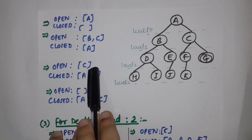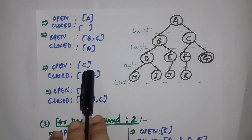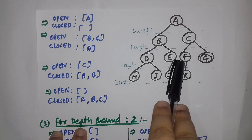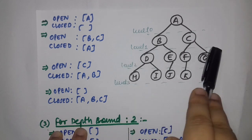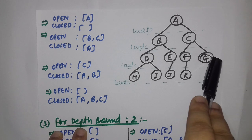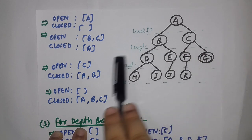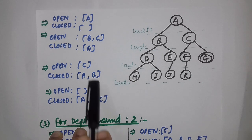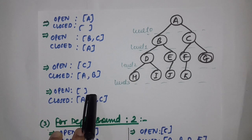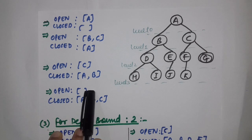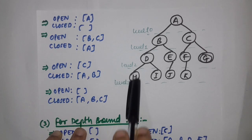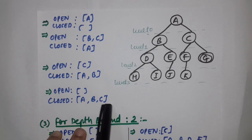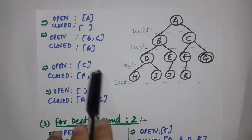Now C is the only element in the open list. We go through element C and see its children F and G, but as we are working on depth bound 1 we don't move past level 1. We simply move C to the closed list and the open list is empty. The closed list now has A, B, and C. We always consider the closed list as the final result.